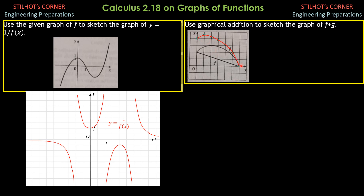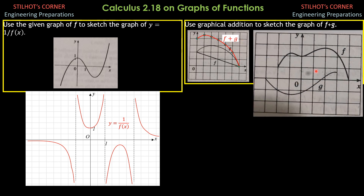I hope that you understood the explanation for combining the graph of f plus g — that is the red curve. For the second part, the common domain is only from this point up to here. Beyond one boundary, f does not exist, and beyond the other, g does not exist. At the starting point, f is positive 1 and g is negative 1, so f plus g starts at 0, since negative 1 plus 1 is 0.